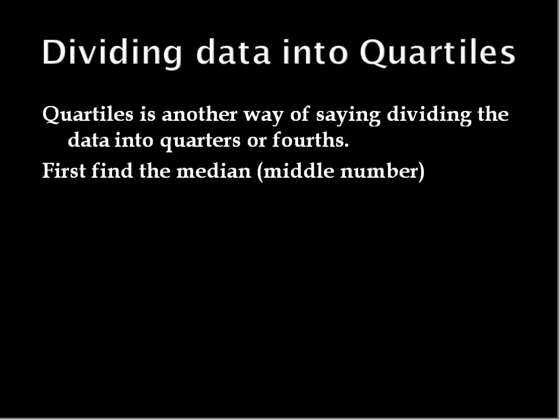The other thing you can do with a stem and leaf plot is divide the data into quartiles. Quartiles is just another way of saying you're dividing them into fourths or quarters. But a quartile is actually the number, the median, the number that's right in the middle of each. And they divide each quarter.